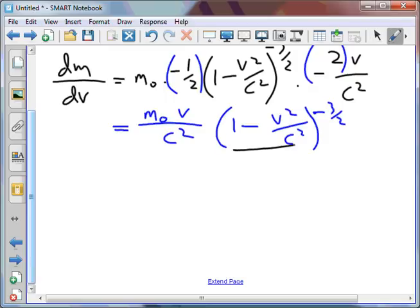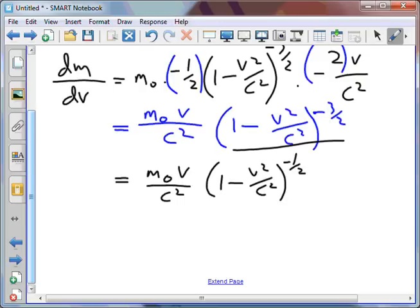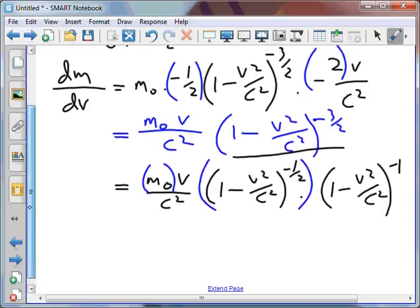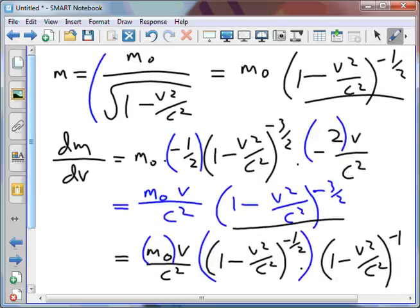I could expand this out so that it looks like 1 minus v squared on c squared to the negative one half multiplied by 1 minus v squared on c squared to the negative 1. And the thing is that this multiplied by this looks exactly the same as this.